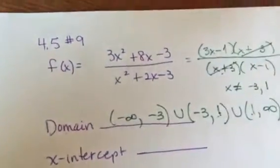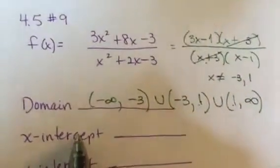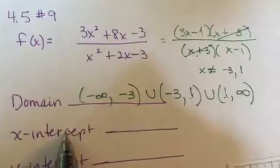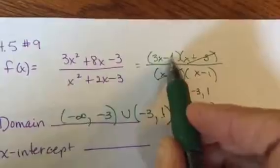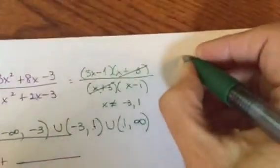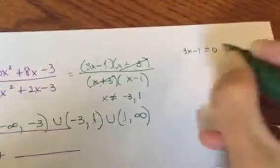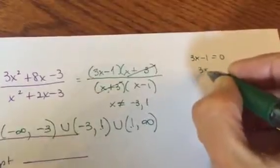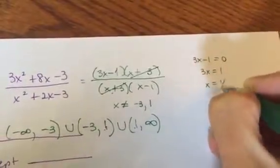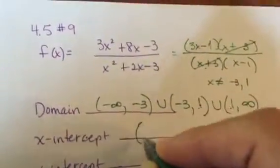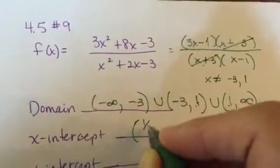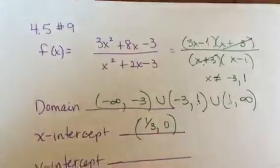Your x-intercept is what makes the numerator 0. So these canceled out. So the only thing that would make the numerator 0, and if you don't see it, come over here to the side and set it equal to 0, and solve it. Move your 1 to the other side, so you see it's 1/3. So that is my x-intercept. So my x-intercept is 1/3, 0.